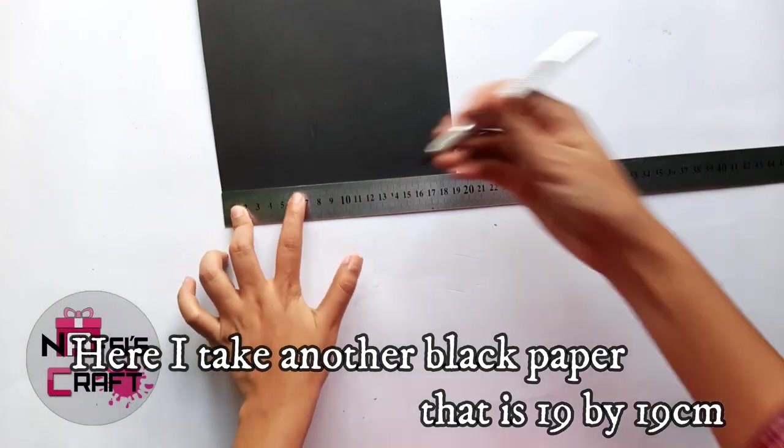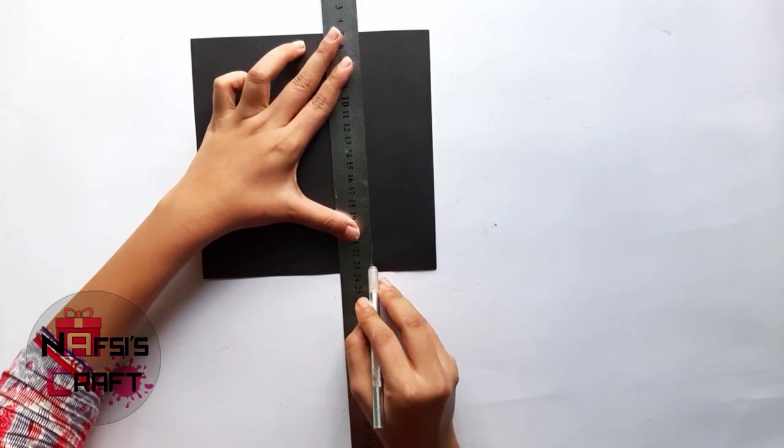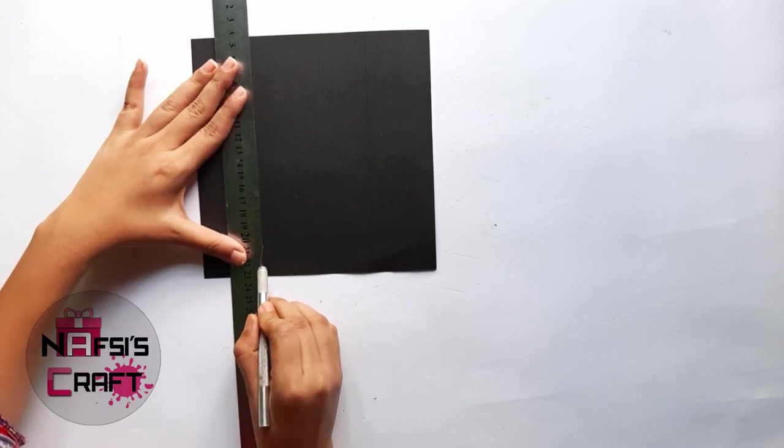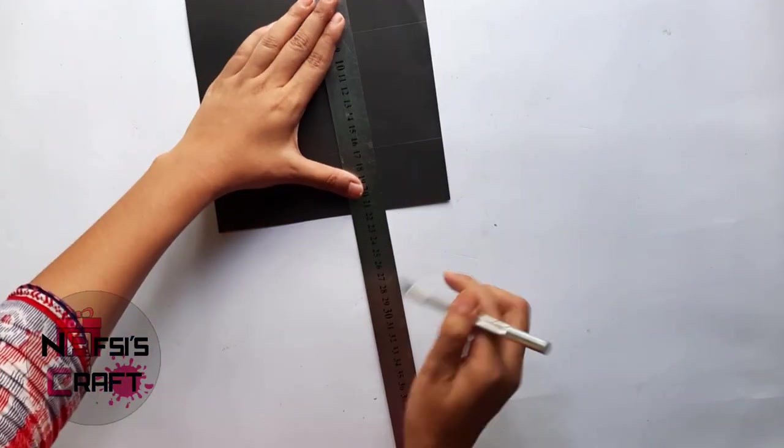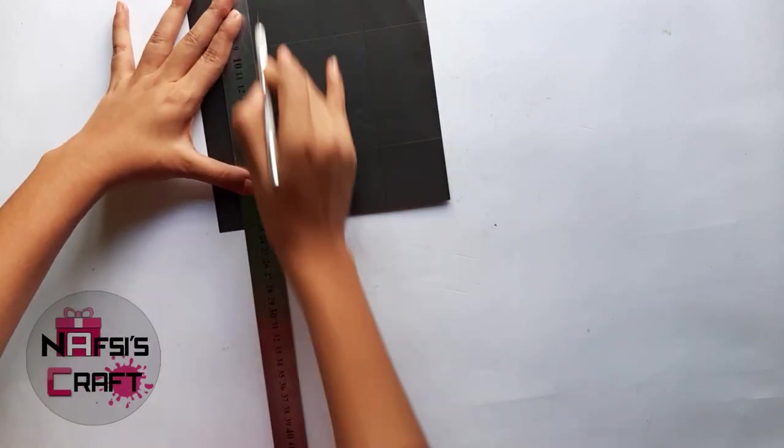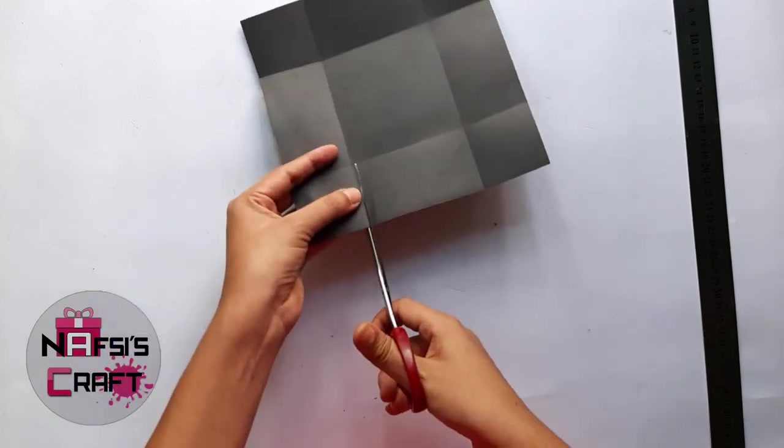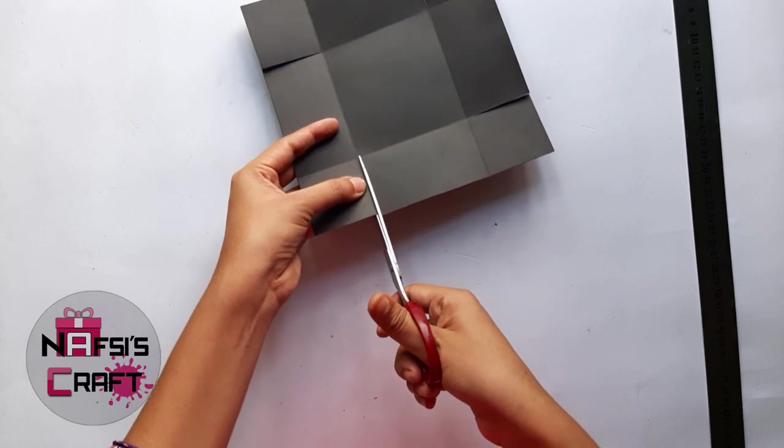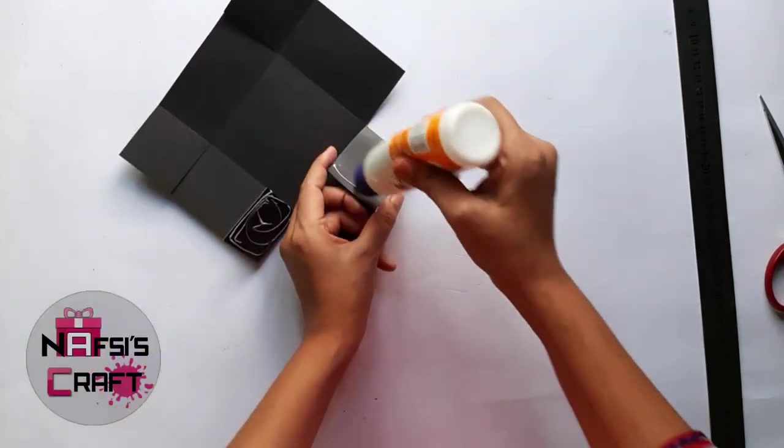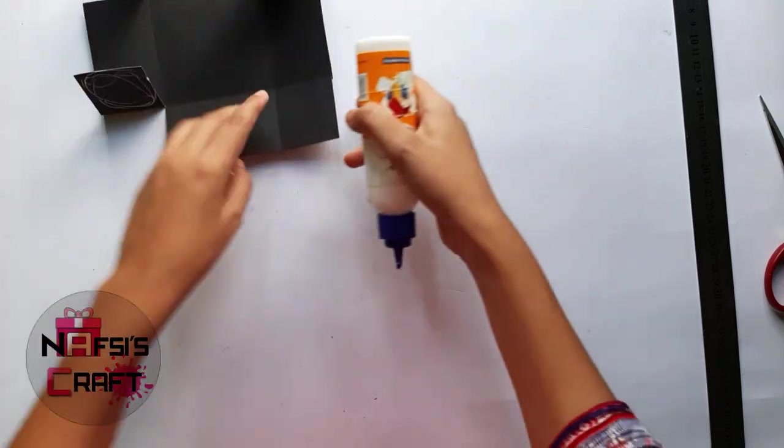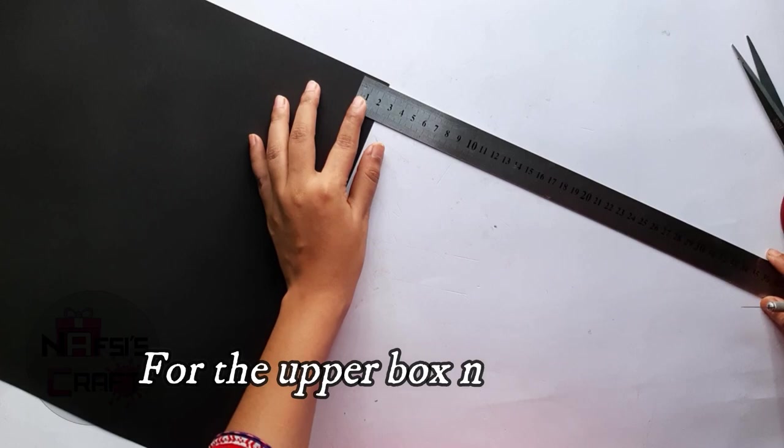Now I will have to make the small one. So I will have to take 19 by 19cm paper. Now divide it into 5, 10, and 19cm. Do it also for the other side 5, 10 and 19 cm. Now attach the line, now cut the corner, after this apply some glue in the corner and attach them. Here is ready your small box.